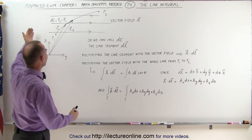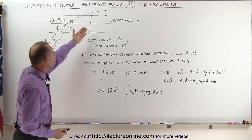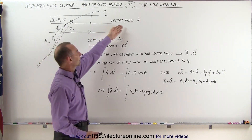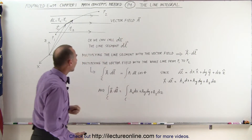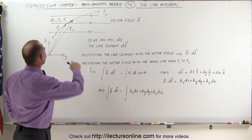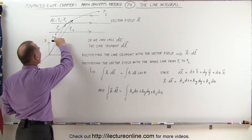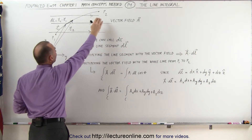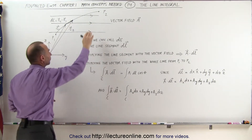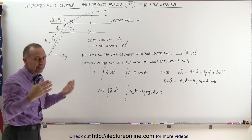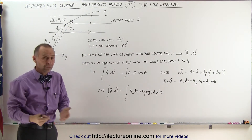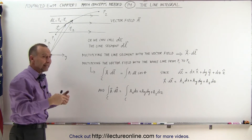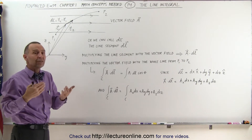So let's say we have an arbitrary vector field — we call the vector field vector A — and let's say that we have a line going from point one to point two. Clearly it goes through the vector field, and of course that line would be represented by some sort of equation expressed in x, y, and z dimensions.